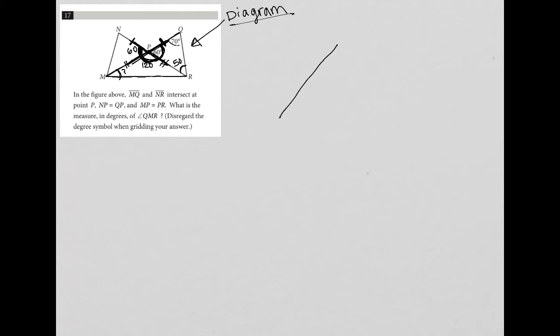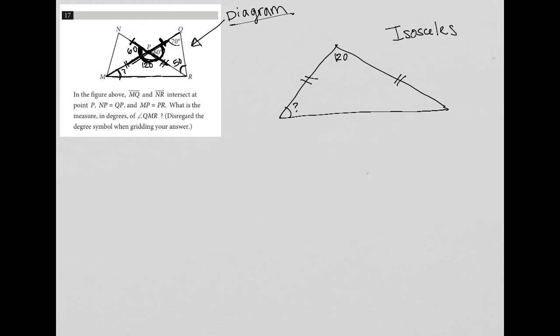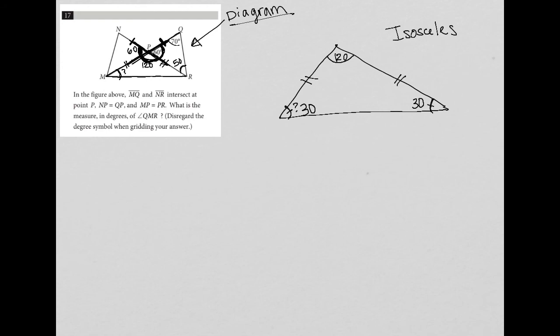I'm going to redraw the bottom triangle that includes the angle I'm looking for. This is my question mark. I know this is 120, and I know that these two sides are congruent to each other. Any triangle that has two congruent sides is called an isosceles triangle. Isosceles triangles have two congruent sides but they also have two congruent angles. So the sum of the three angles — this 120, the left angle, and the right angle — must add up to 180 degrees. Because each of the bottom angles are equal to each other, I'm going to split the remaining 60 degrees into 30 and 30. So each angle down here is 30.